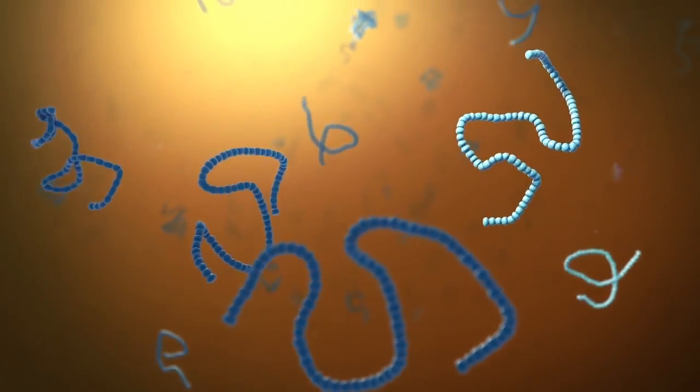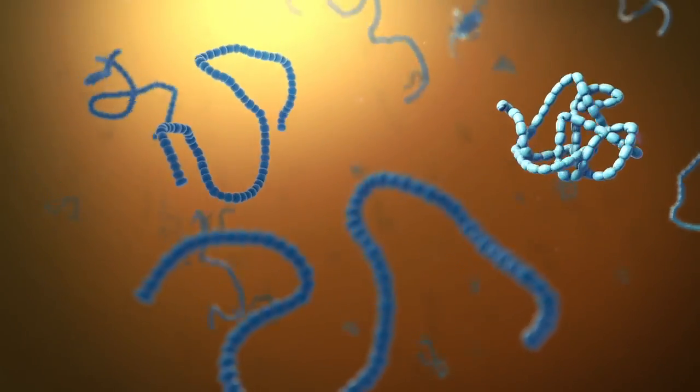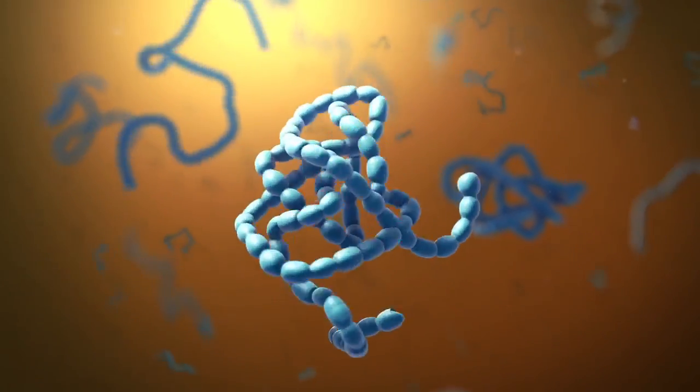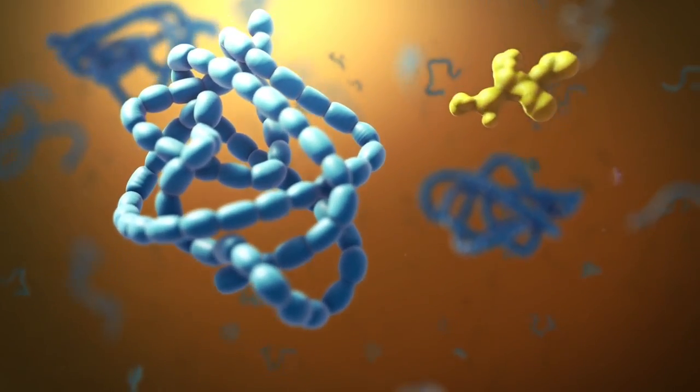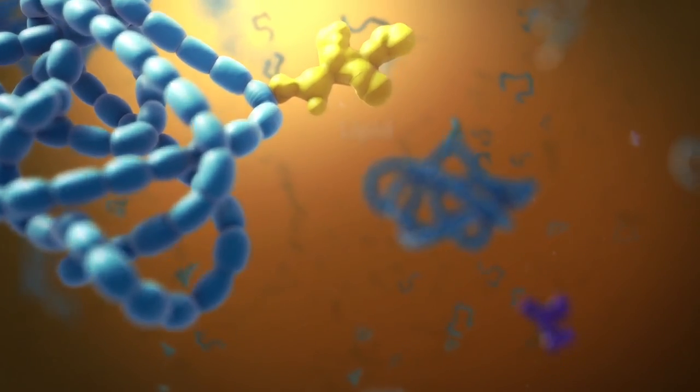As proteins move through the Golgi body, they're customized into forms that the cell can use. The Golgi body does this by folding the proteins into usable shapes or adding other materials onto them, such as lipids or carbohydrates.